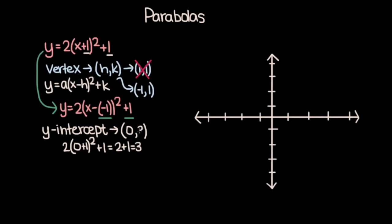So the y-intercept has coordinates 0 comma 3. Now that we have the vertex and the y-intercept, we can draw a rough sketch of the parabola. The vertex is at negative 1 comma 1 and the y-intercept is at 0 comma 3. We can use the symmetry of parabolas: taking a one-unit step to the right from the vertex gives a y value of 3, so a one-unit step to the left must also give y equals 3. Based on these three points, the parabola opens upward, which is confirmed by a equals 2, which is positive.